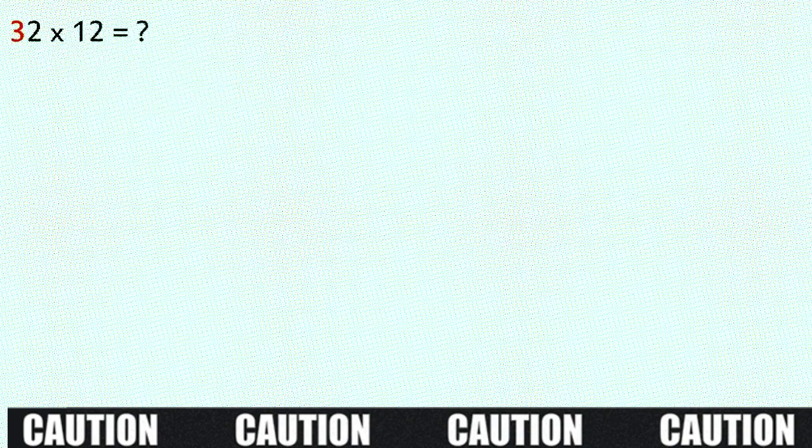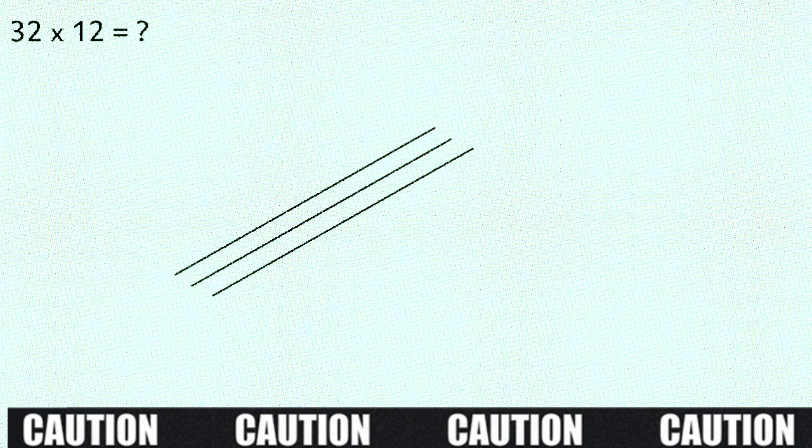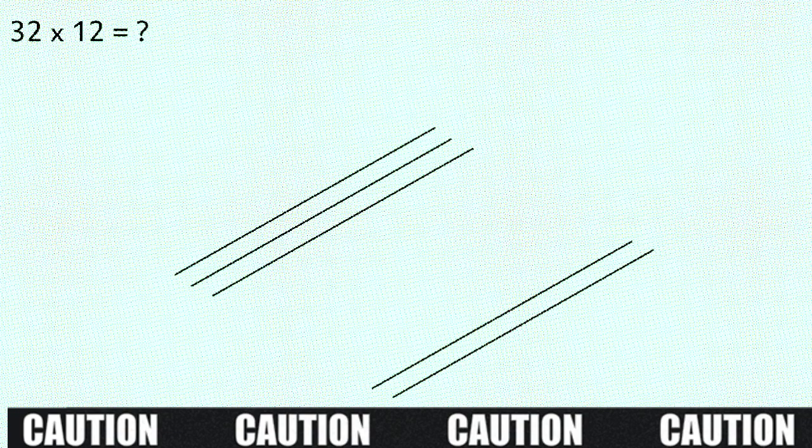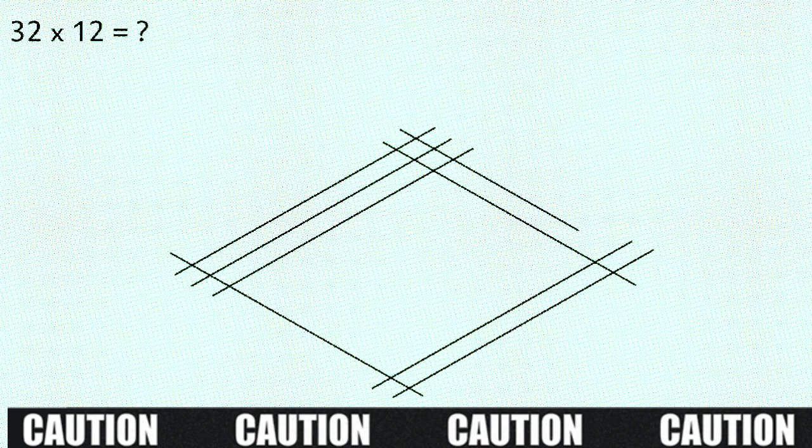So here's another quick example, 32 times 12. The first digit of the first number is 3, so we draw three lines here. The next number is 2, so draw two lines here. Then we have the multiplication sign and the next number is 1, so draw one line from here to here. And the final number is 2, so draw two lines here. Then we mark out our three zones again.